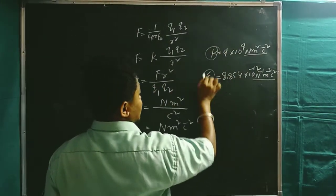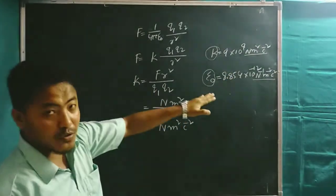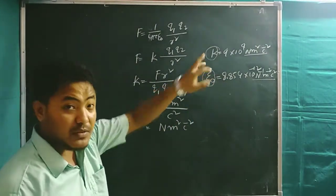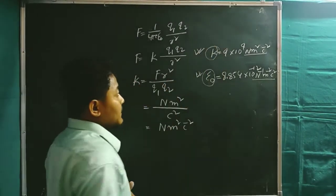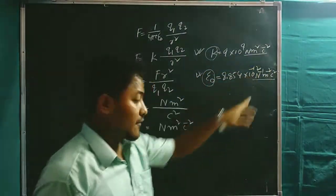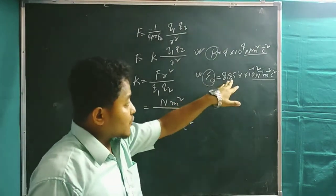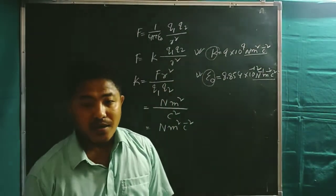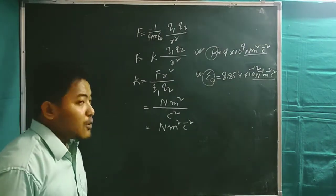This is all about Coulomb's law and its necessary components. Remember these two values: the value of k is 9 × 10⁹ N·m²/C², and the value of electric permittivity ε₀ is 8.854 × 10⁻¹² C²/(N·m²). I think these two things are now very clear.